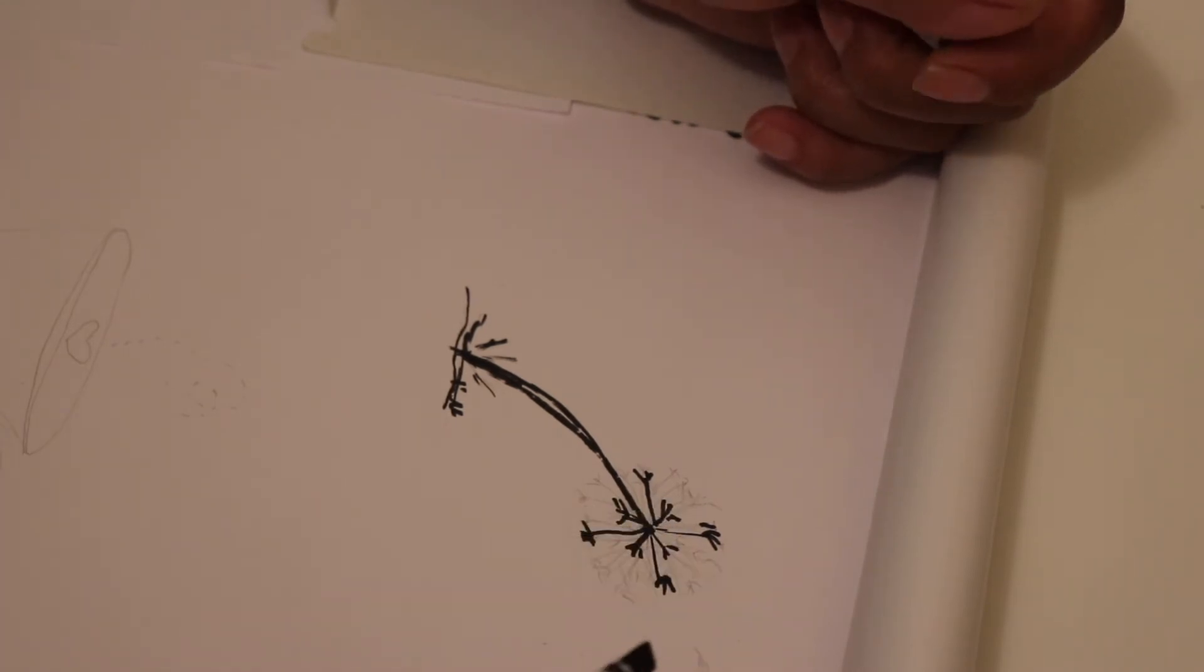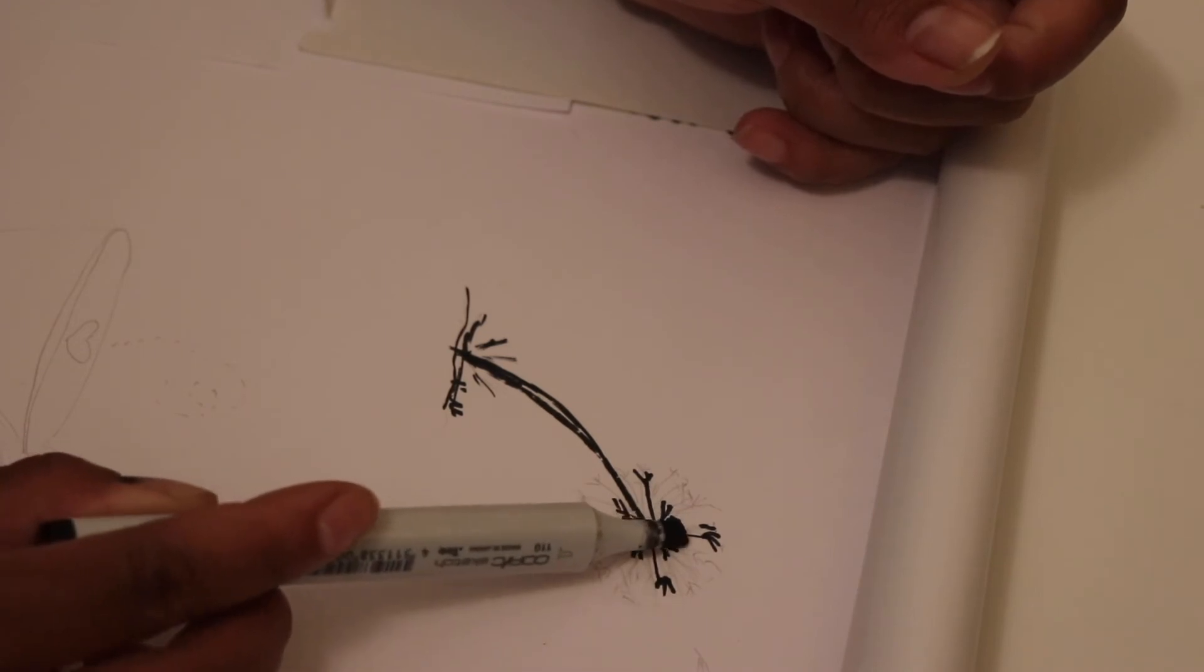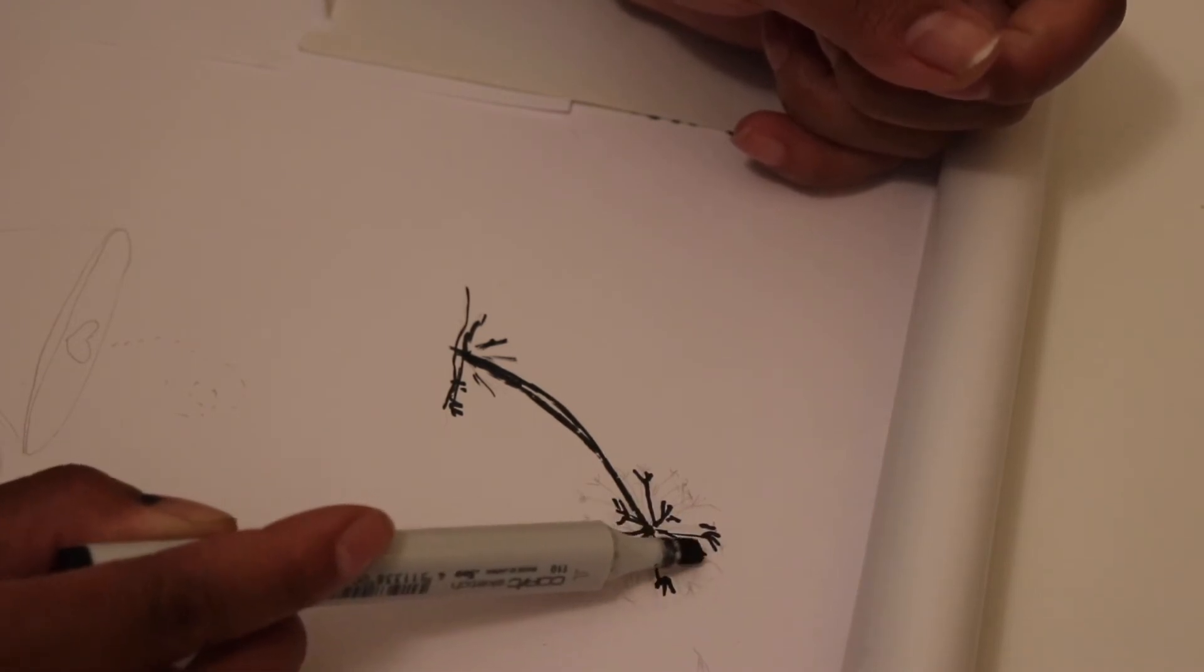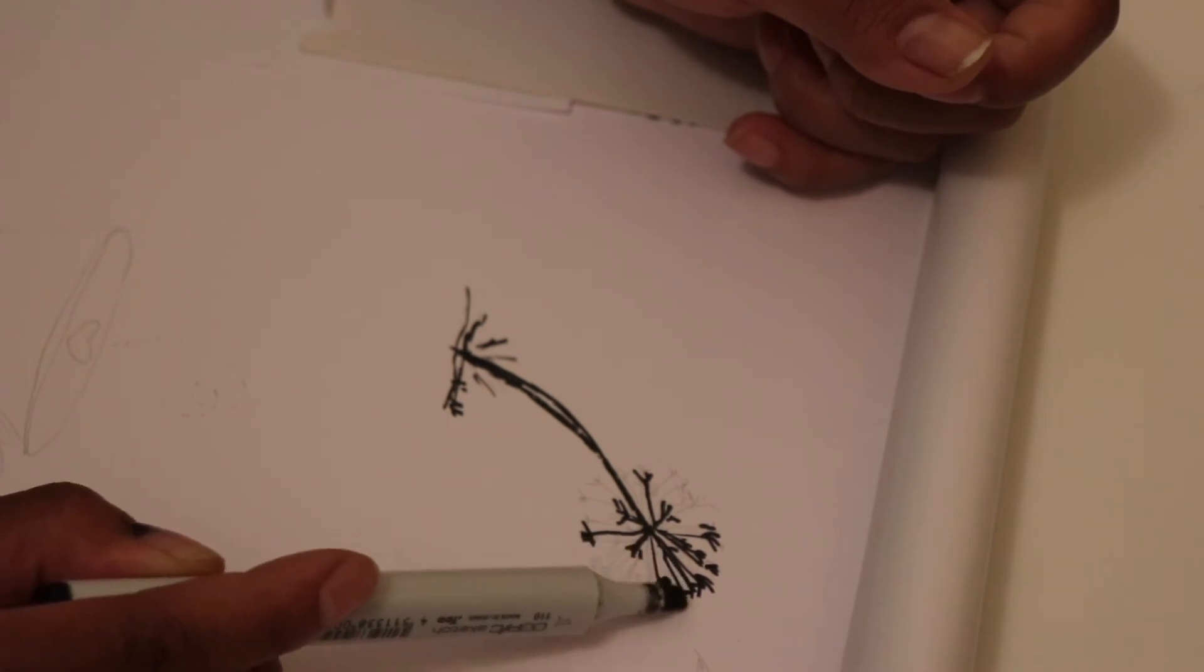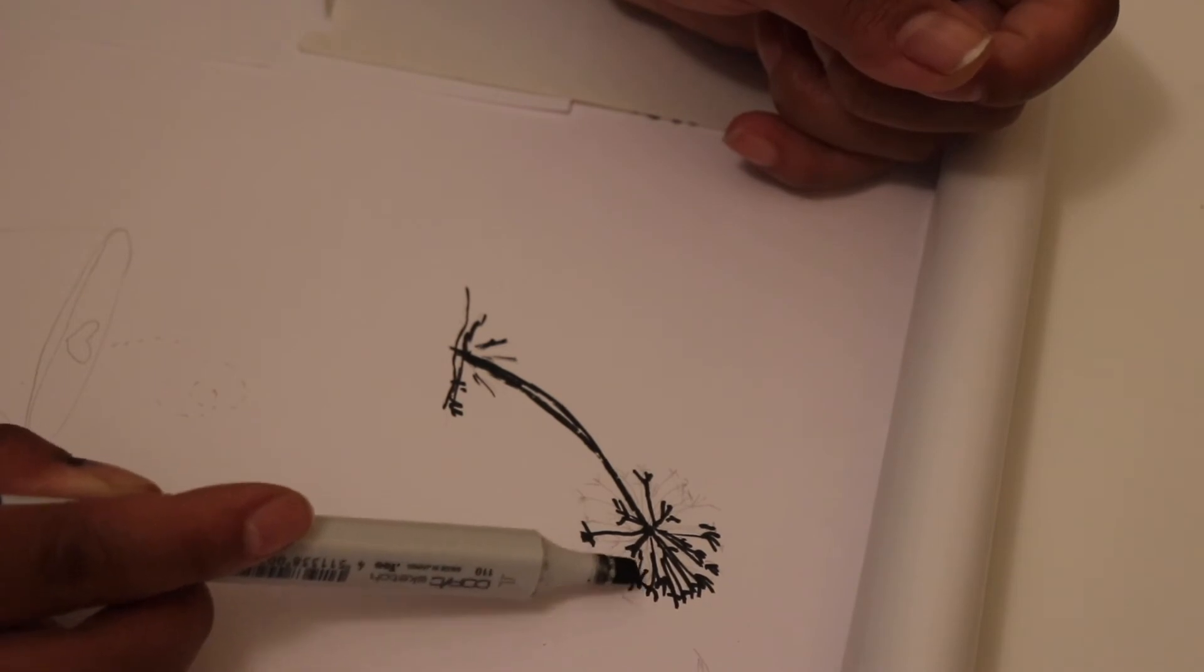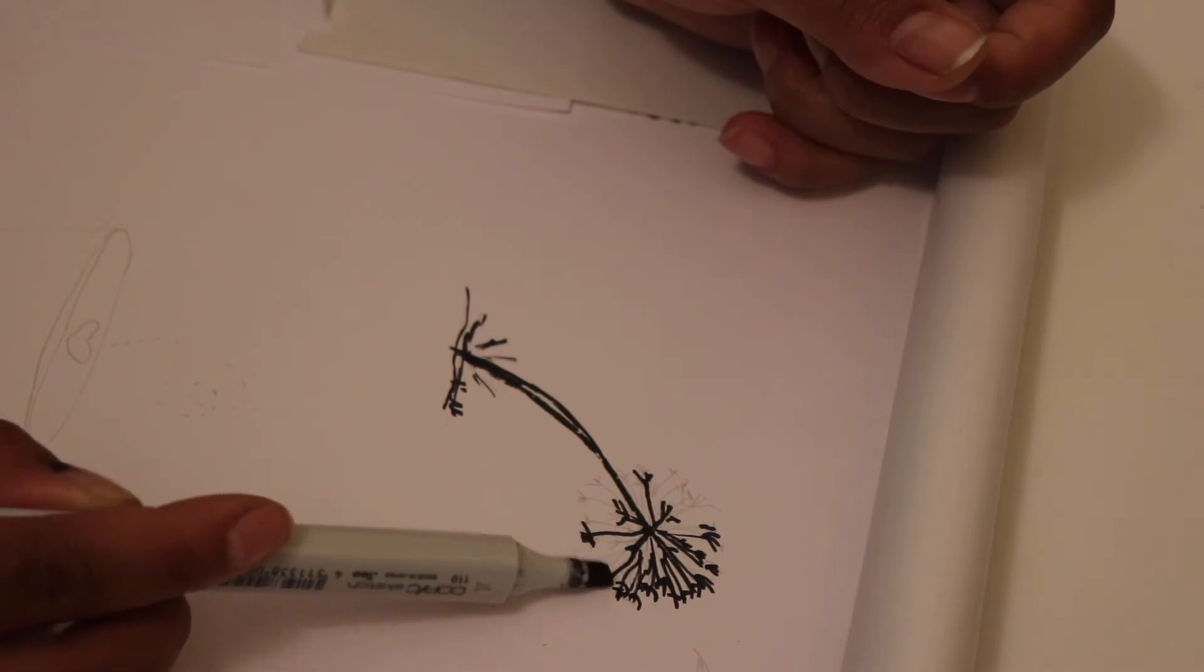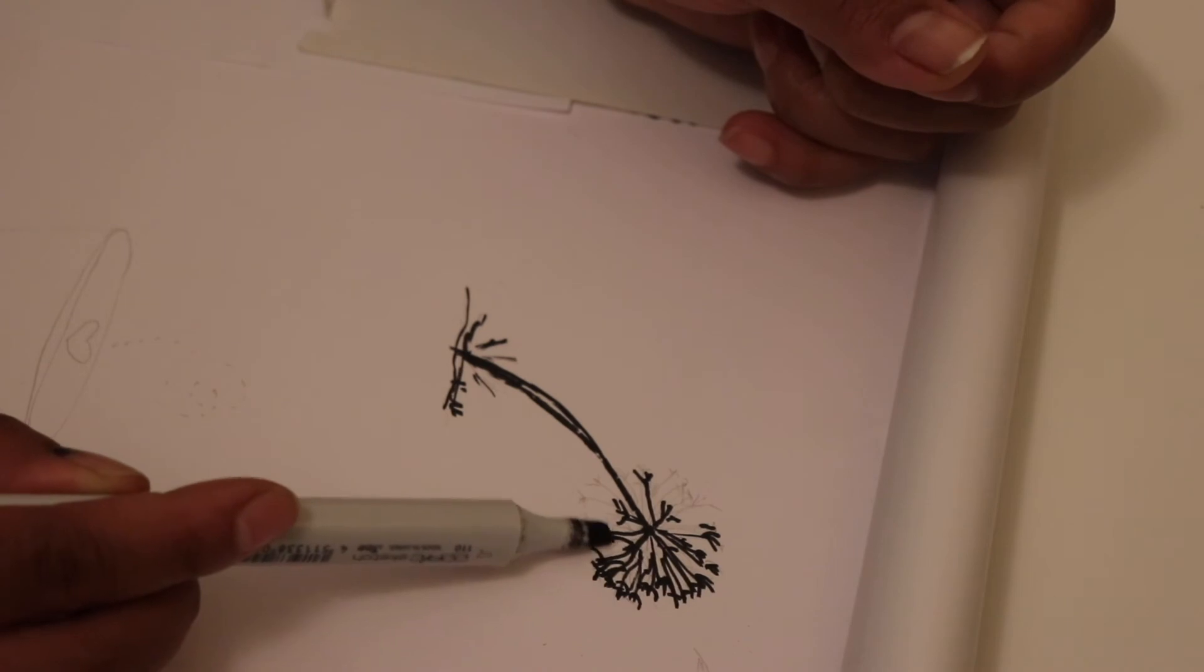And to complete your wish flower, you just keep repeating these steps over and over again. Just like this. Nice and gentle. Because no flower is super perfect. I mean, they're all beautiful. But even an identical flower is still going to be different. So no flower is the same.